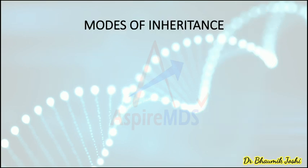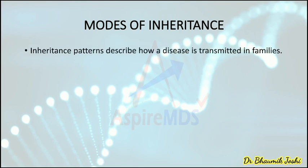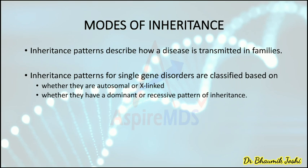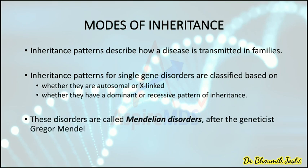Now let's understand the modes of inheritance — how traits and phenotypes are passed from parents to children. Inheritance pattern describes how a disease is transmitted in families. For a single gene disorder, it can be classified based on whether the condition is autosomal or X-linked, and whether the pattern is dominant or recessive. Because of the extensive work of geneticist Gregor Mendel, these kinds of disorders are also known as Mendelian disorders.